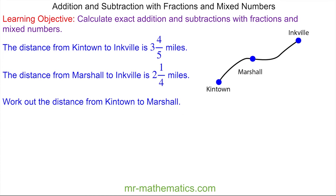I'm going to begin by annotating our diagram where from Kintown to Inkville is three and four-fifths, and from Marshall to Inkville, which is here, is two and one-quarter.